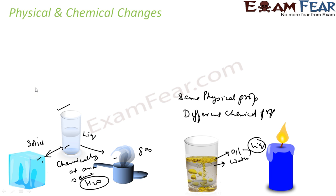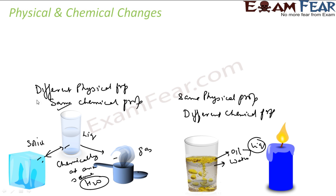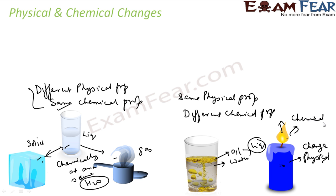Chemical properties and physical properties are totally independent. For example, when you burn a candle, the candle becomes smaller — there is a change in physical property. Also, the wax area melts: from solid it becomes liquid — another change in physical property. Since it is burning, the candle is converted to light and heat energy — there is a change in chemical property as well. This is an example where both chemical and physical change take place.